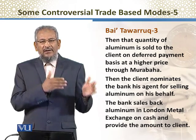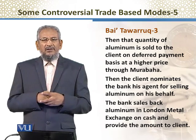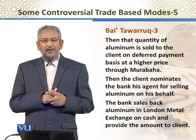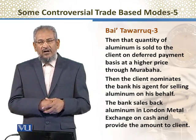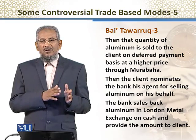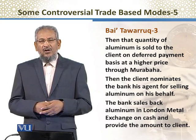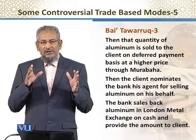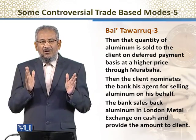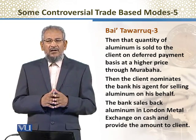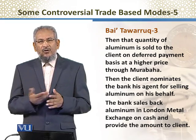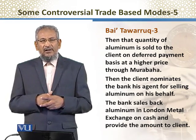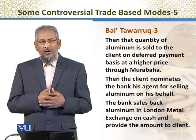Then the bank, as agent of the client, sells back the same aluminium to the Metal Exchange اور ان سے 100 million cash وصول کر کے آگے client کو فراہم کر دیتا ہے۔ Client اس cash سے اپنی ضروریات پوری کرتا ہے اور بعد میں بینک کو 110 million dollars ادا کر دیتا ہے۔ اس طرح کے organized tawarruq کو — جس میں commodity exchange کو استعمال کیا جاتا ہے — commodity murabaha بھی کہا جاتا ہے۔